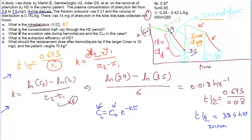Let's get back to the next problem. What is the concentration halfway through the hemodialysis period? Halfway through the hemodialysis, that is three hours, because the total dialysis time is six hours. So what is the halfway concentration? We know the concentration in the beginning, that is 3.9 mg per liter.